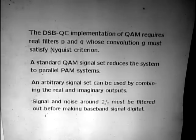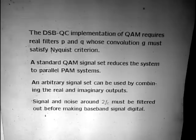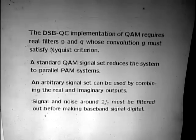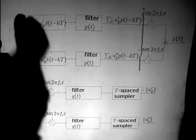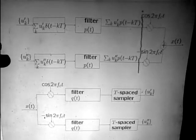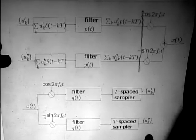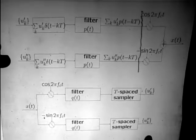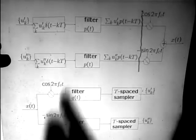Here we need the waveforms to be real in order to implement this just by multiplying by cosine and sine. So the standard QAM signal set makes it just parallel PAM systems. If you don't use a standard QAM set—if the two things are mixed up in some kind of circular signal set—then what comes out has to be demodulated in the same way, and you don't have total separation.